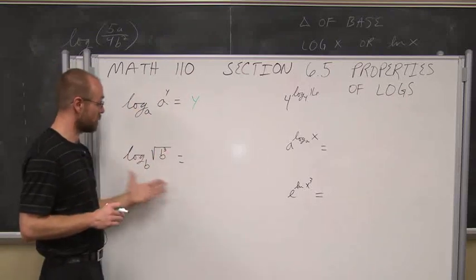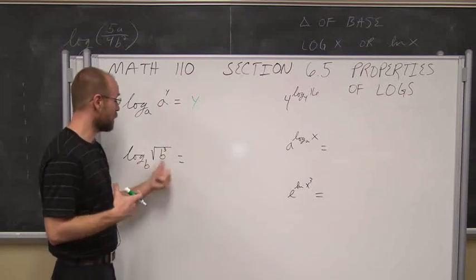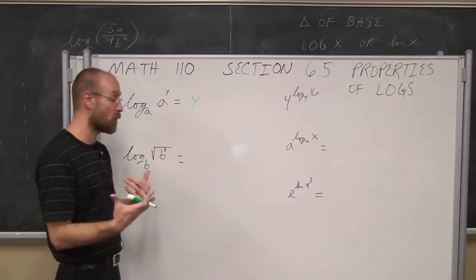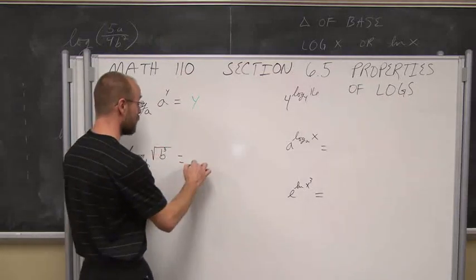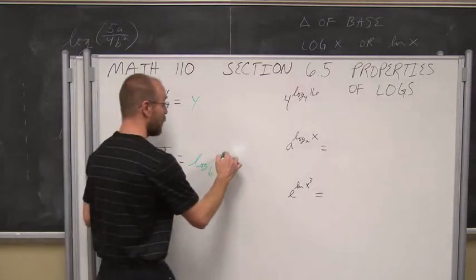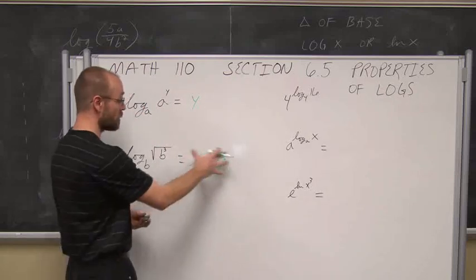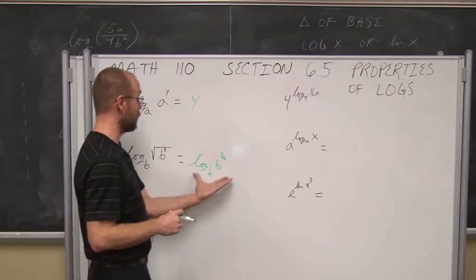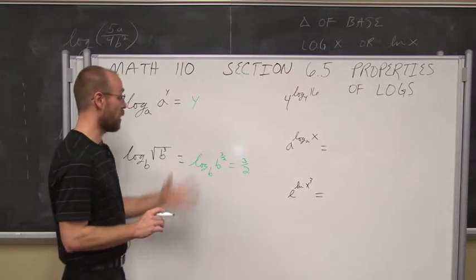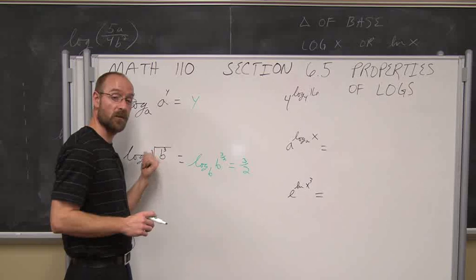If we have log base B of the square root of B cubed, we need to realize that this radical is just a fractional exponent. We rewrite this as log base B of B to the third power to the one-half power, which gives B to the three-halves power. Now that we've rewritten it using our rules of exponents, we can see it fits this case: when the bases are the same, it simplifies to the power, which is three-halves.